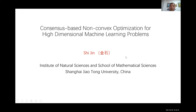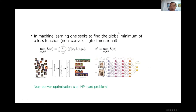I'm going to talk about something related to the previous talk from a couple weeks ago. We will offer a different perspective on what is called consensus-based non-convex optimization. Machine learning and deep neural networks are a very hot field in science.